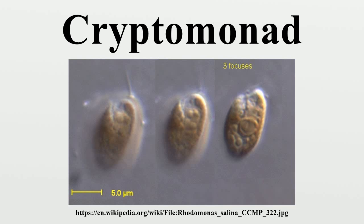Cryptomonads are distinguished by the presence of characteristic extrusomes called ejectosomes, which consist of two connected spiral ribbons held under tension. If the cells are irritated either by mechanical, chemical, or light stress, they discharge, propelling the cell in a zigzag course away from the disturbance.